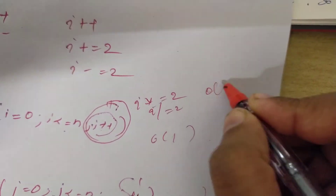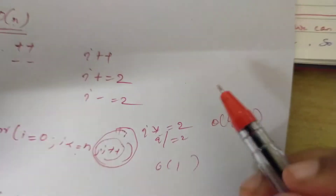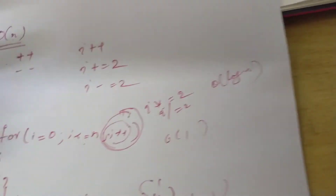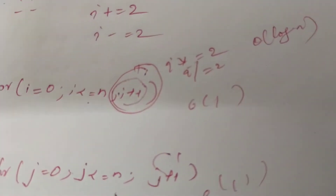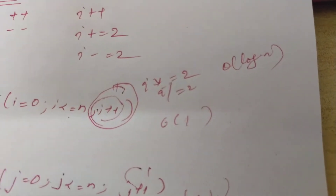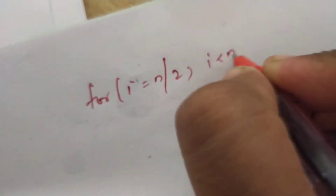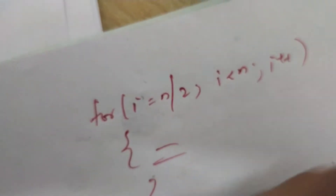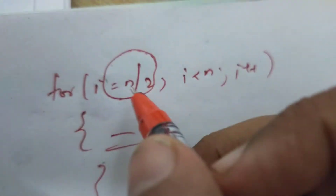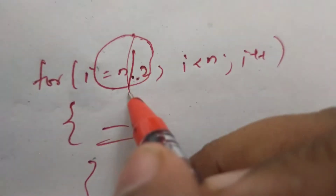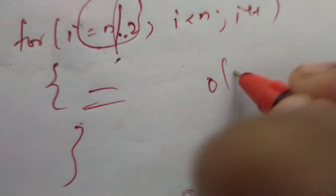In this case we have to add order of log n. If the loop variable is divided or multiplied by a constant — for example, i equals n divided by 2, i less than n, i plus plus — if the loop variable is divided or multiplied by a constant, then we get order of log n.